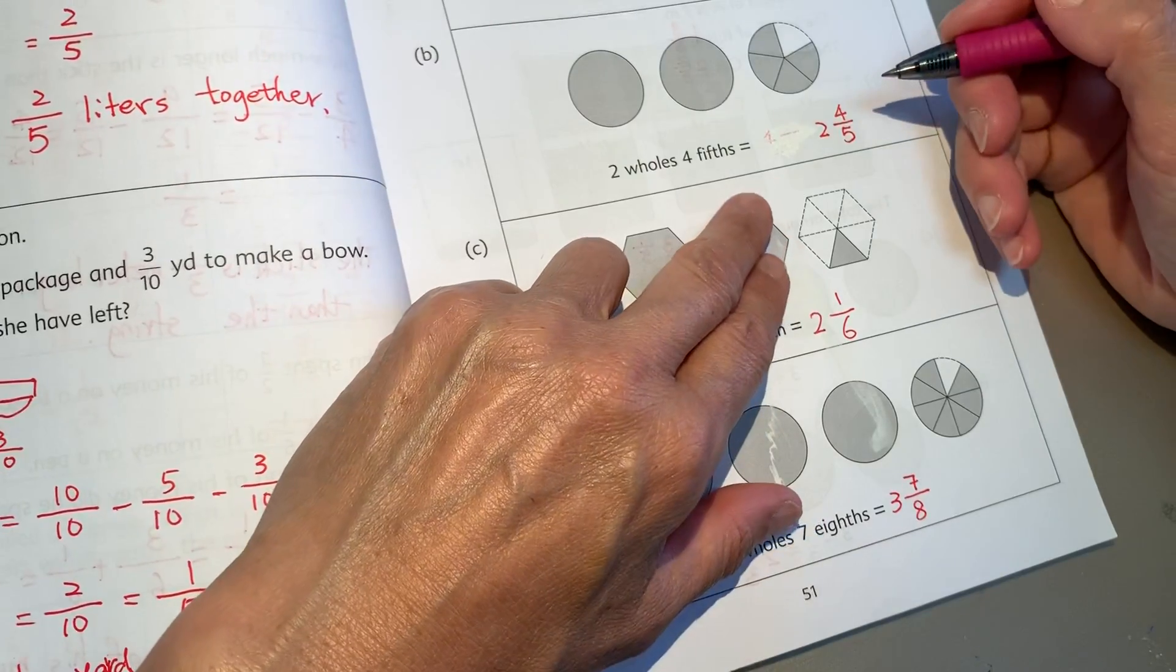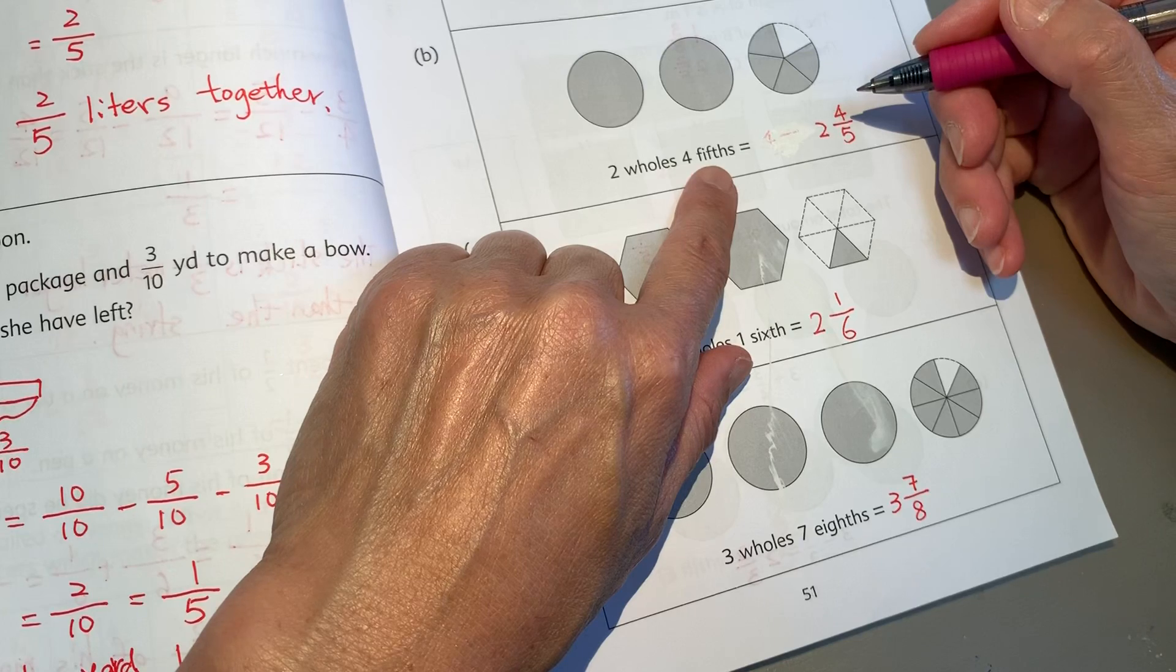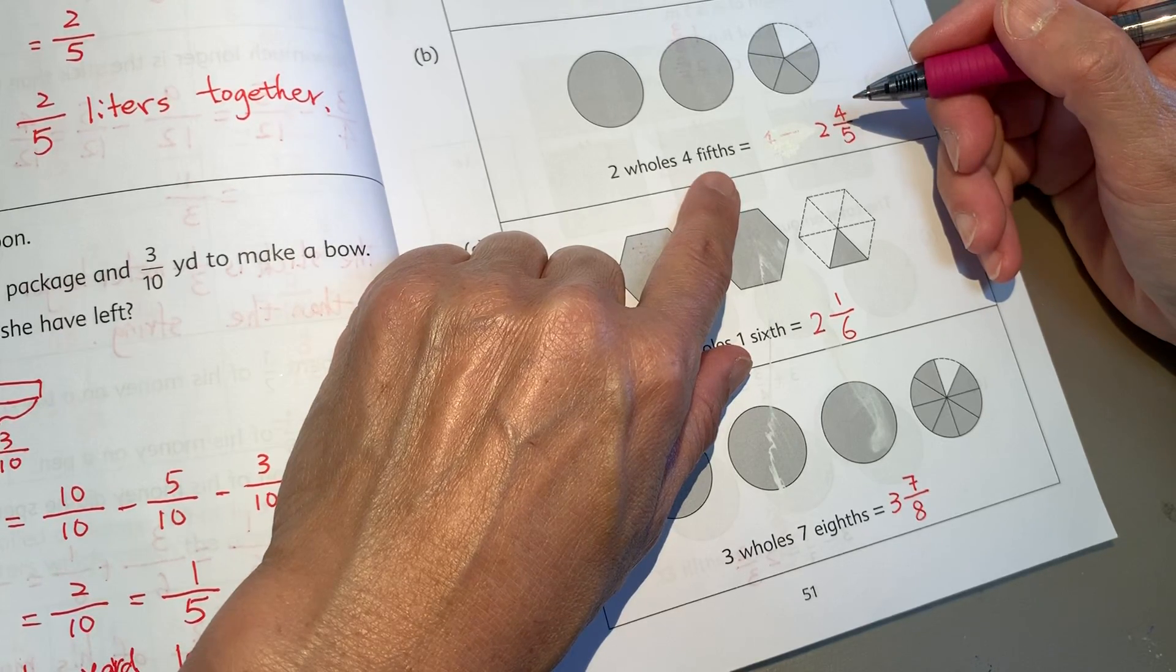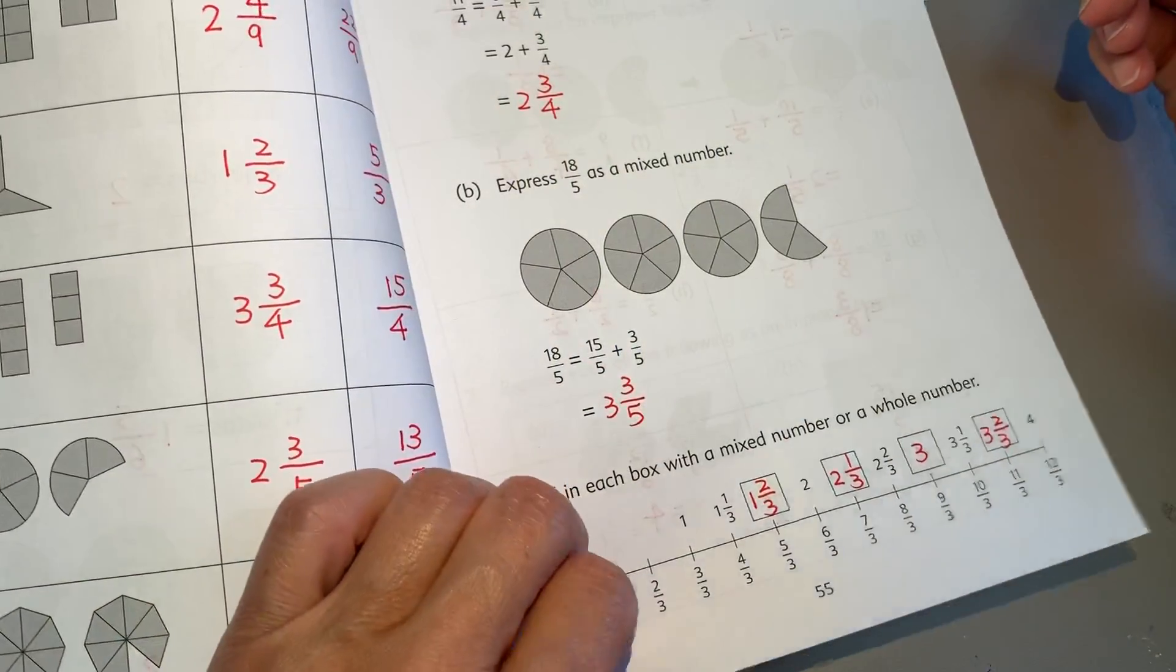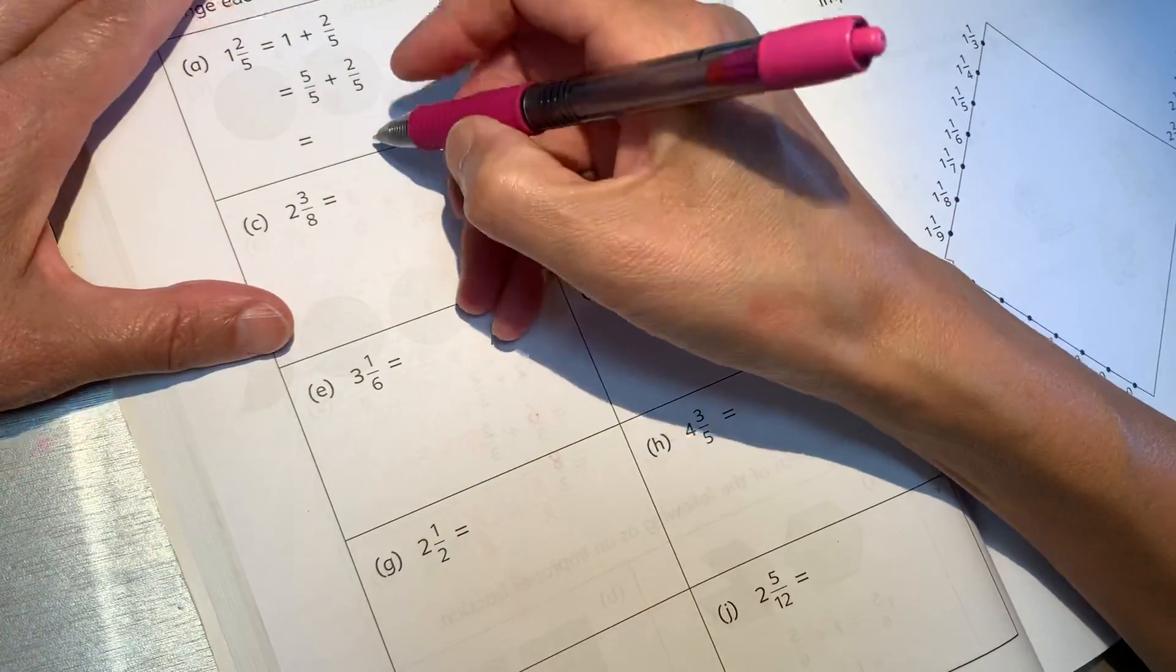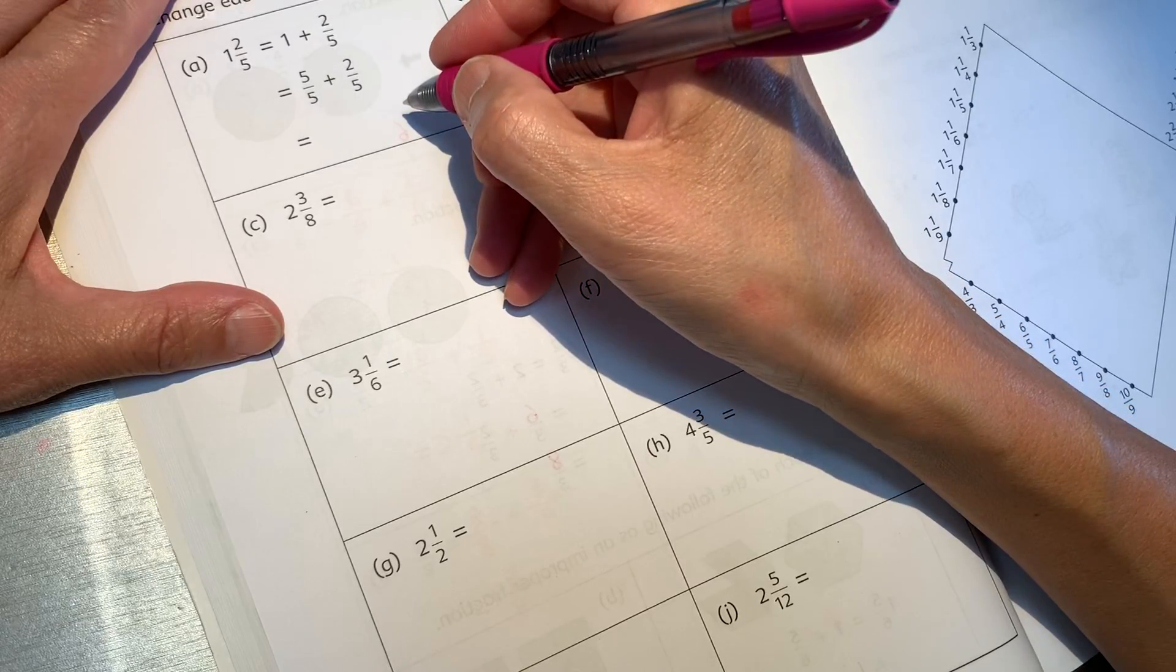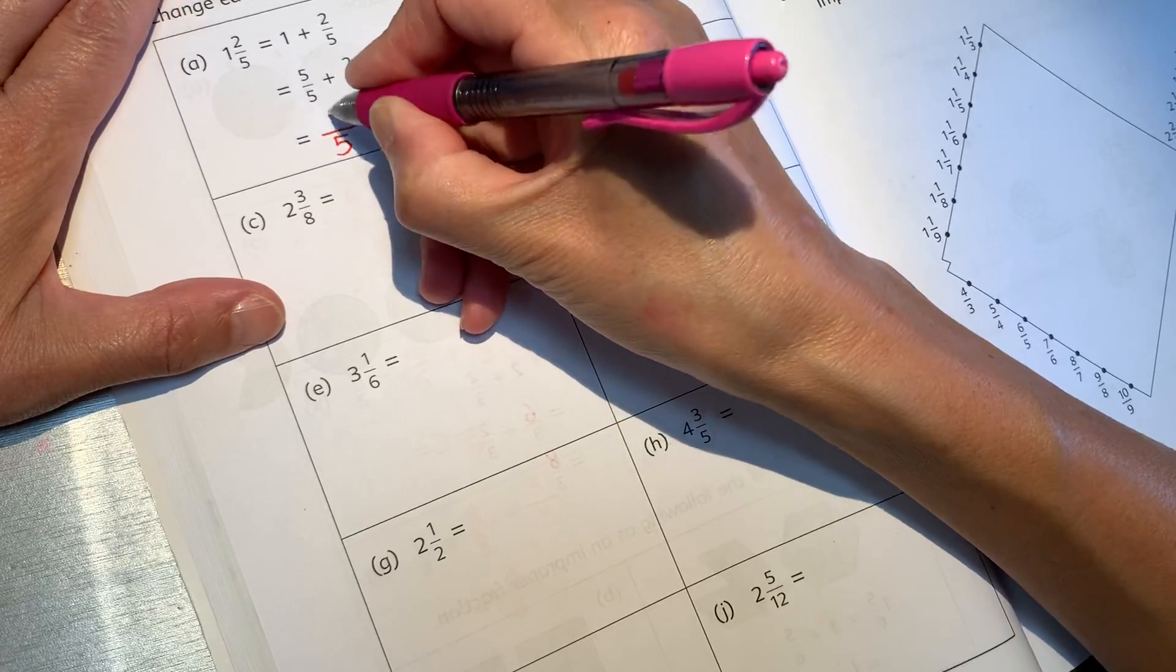2 whole and 2 whole, 4 fifths, 2, 2, 7, 7